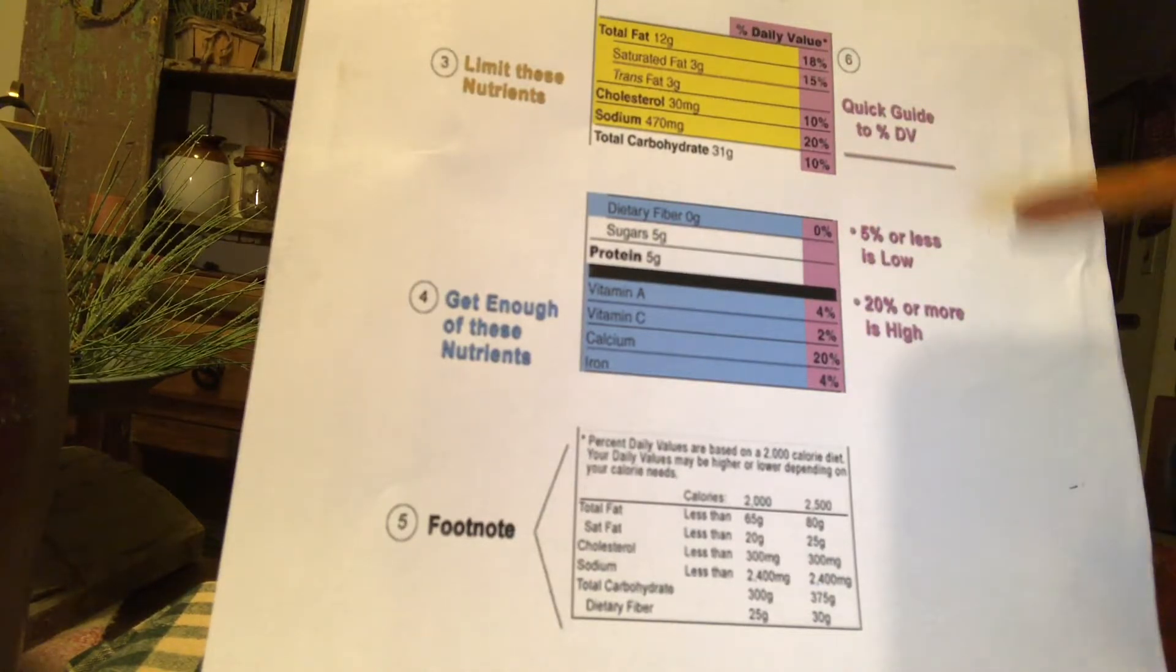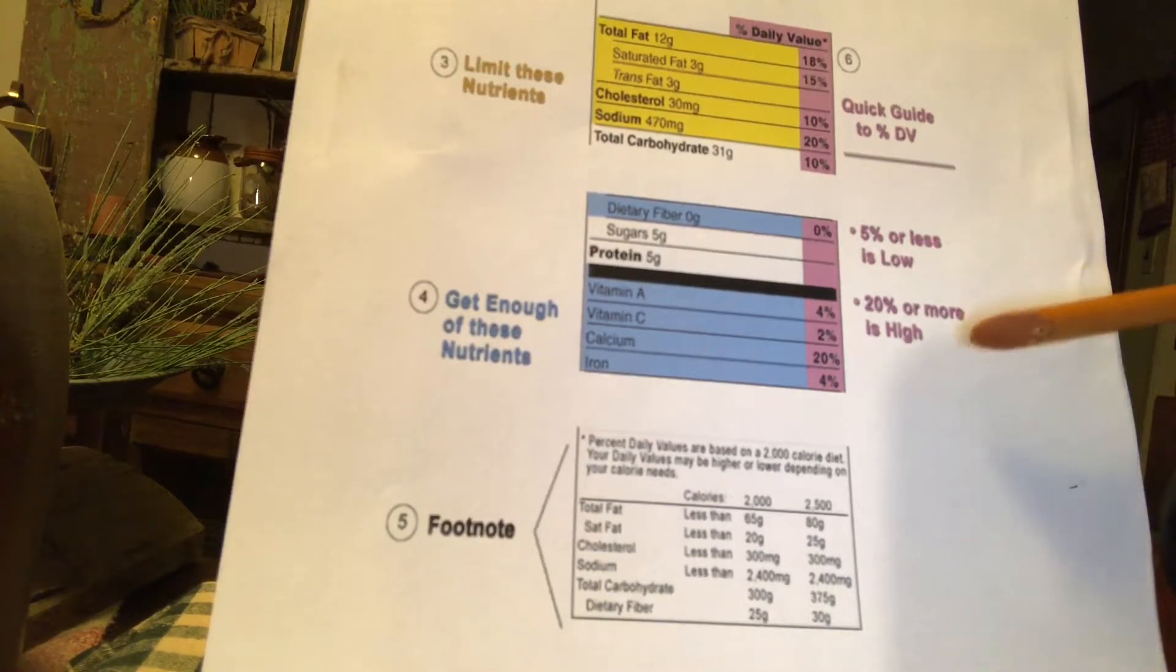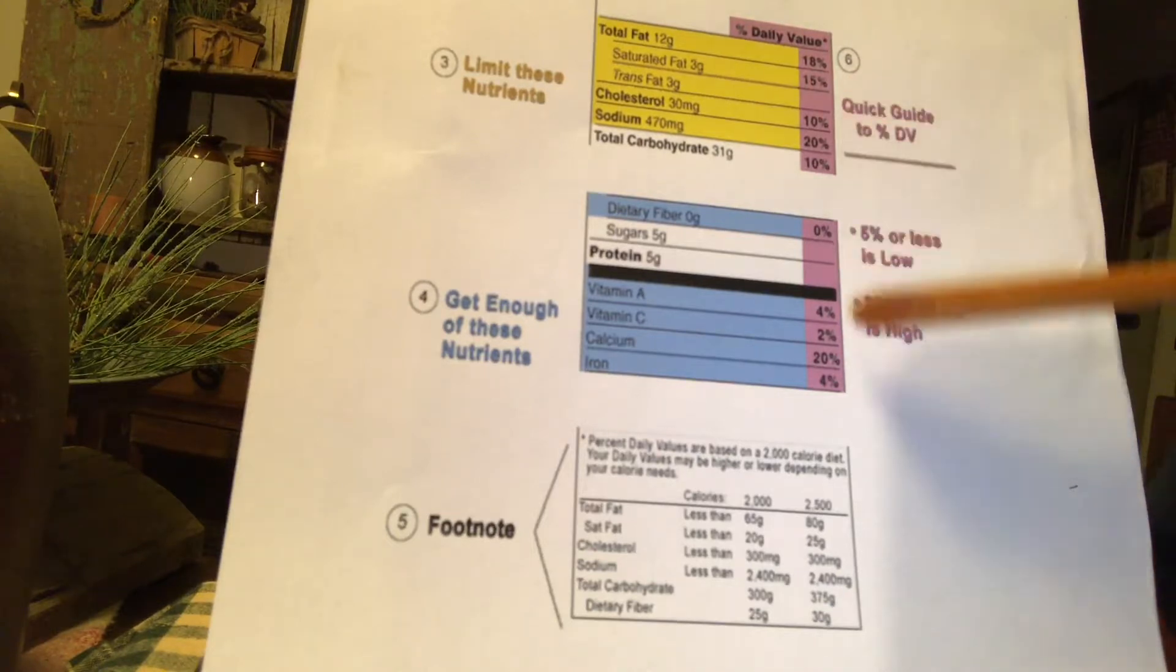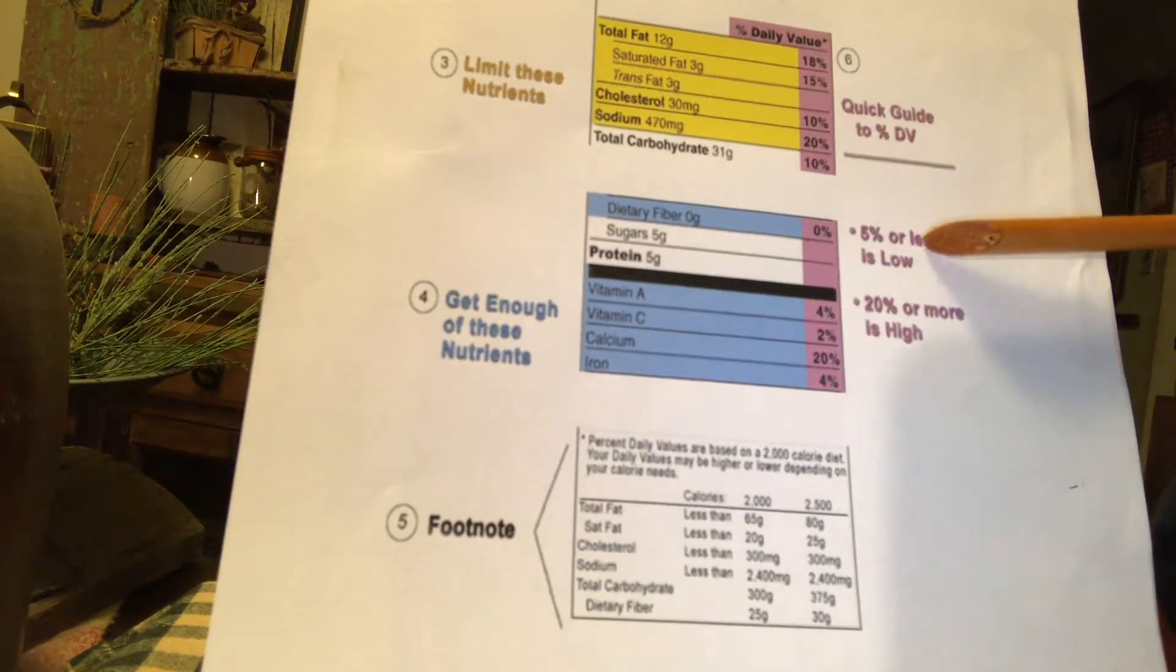The guideline is that if a number in here is 20% or more, that is considered a high item. Whereas, if the numbers within this column are 5% or lower, then that is a very low ingredient for that product.